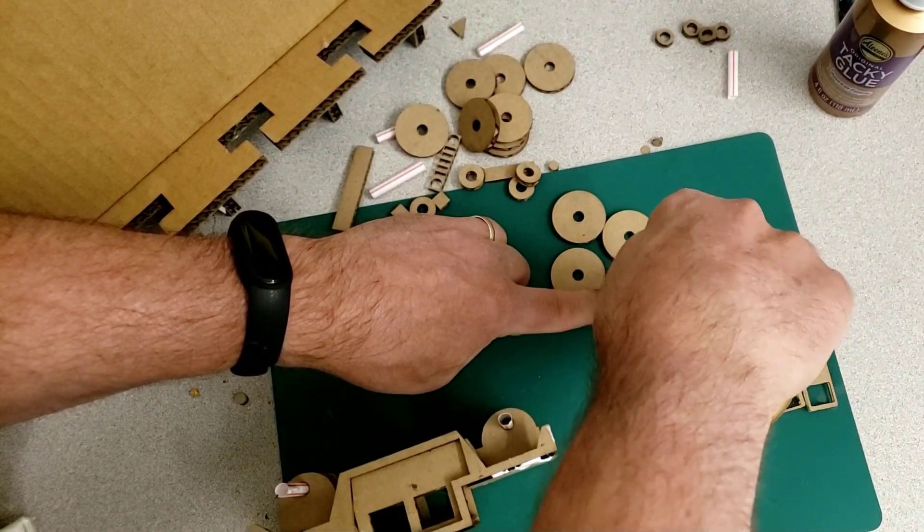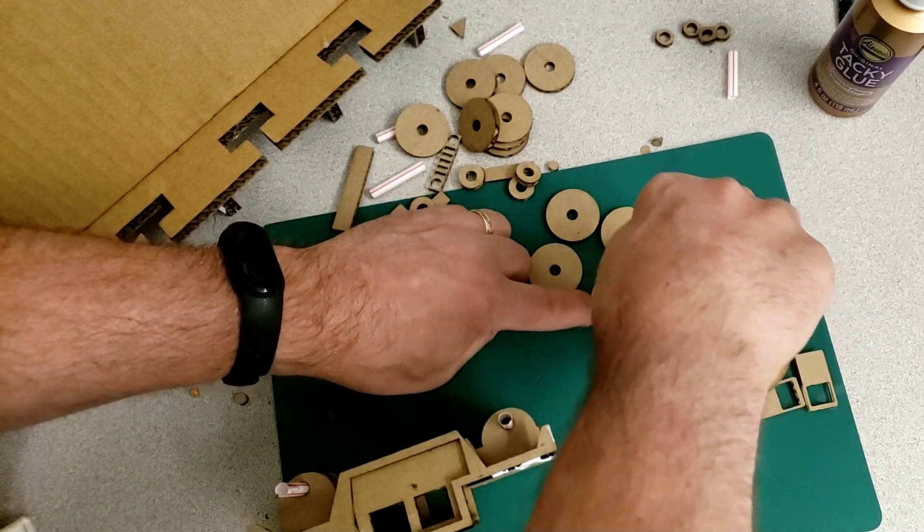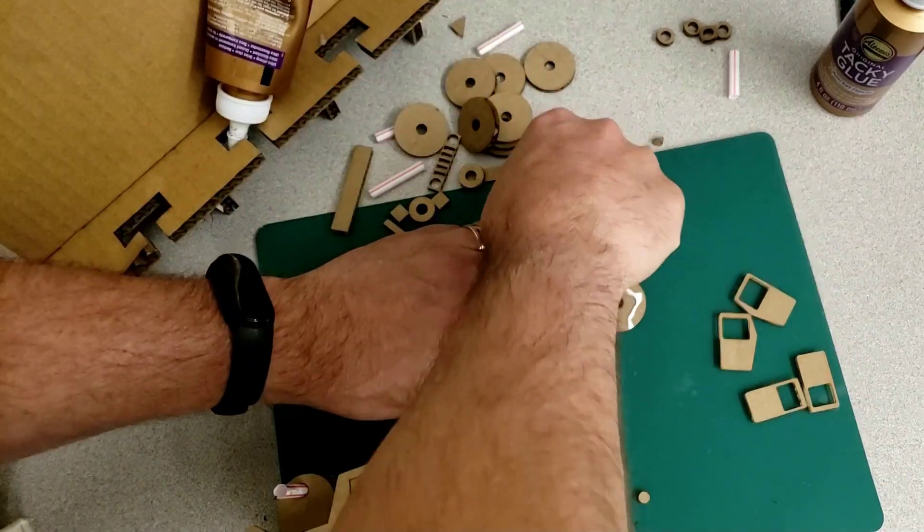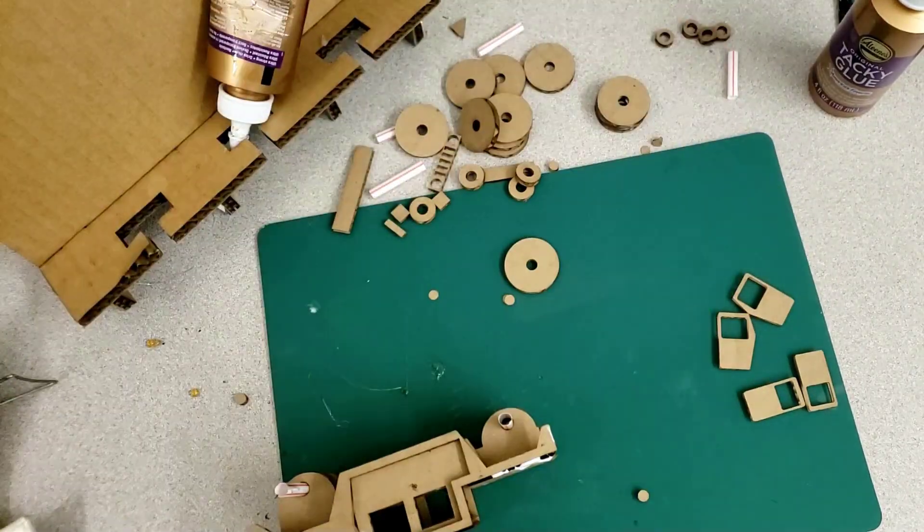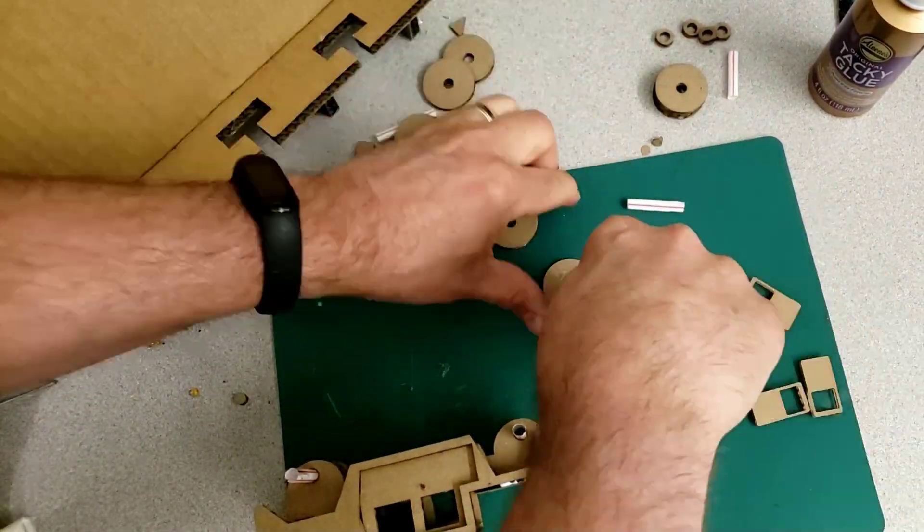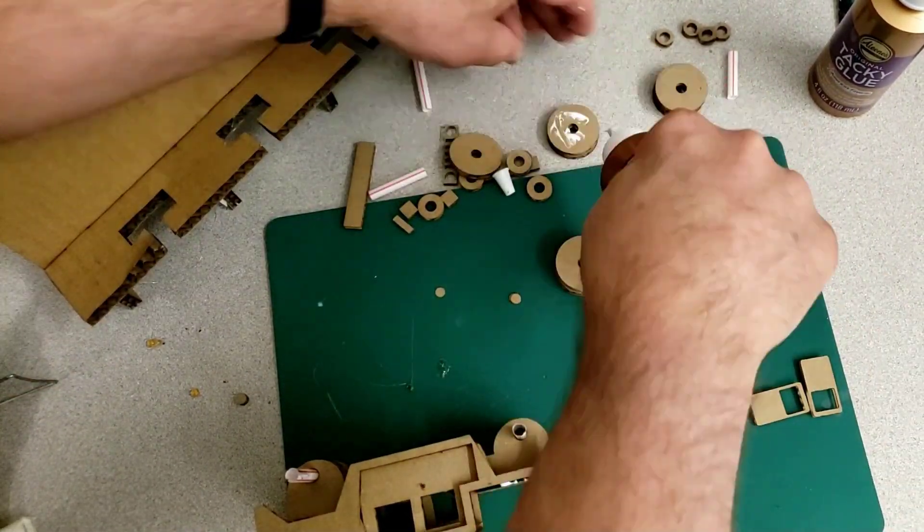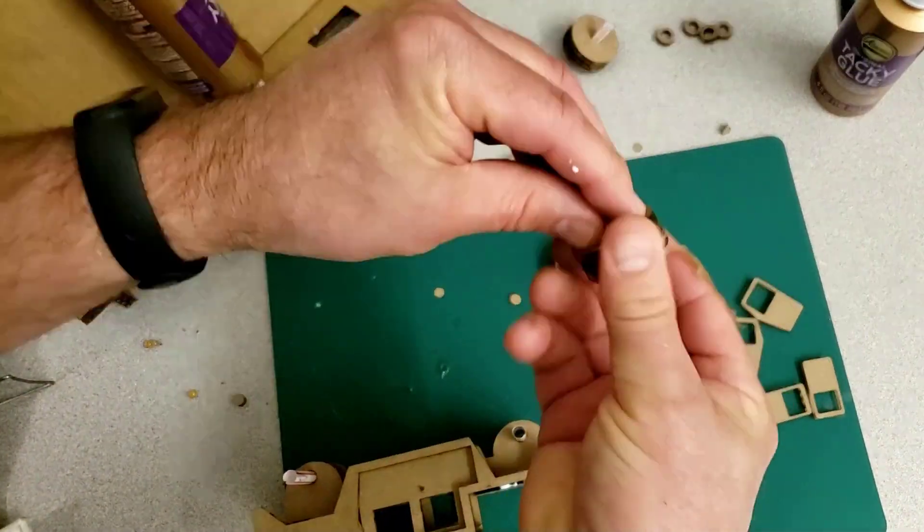Alright so let's glue some wheels together. They go in threes. So that means you put glue on two at a time. And repeat that process for all the wheels. Make sure you've got a scrap piece of straw so you can line those wheels up and leave them to dry.